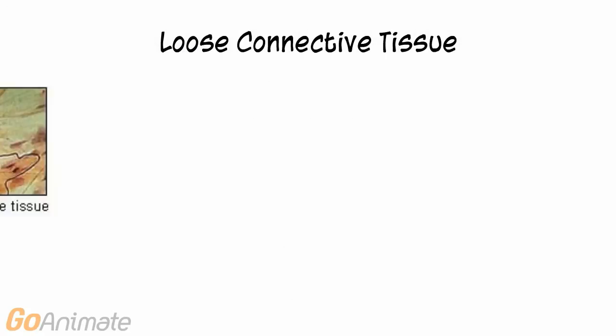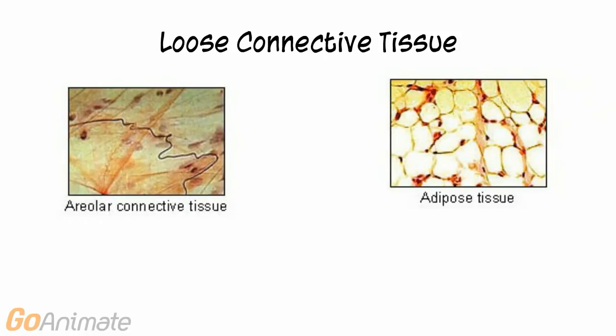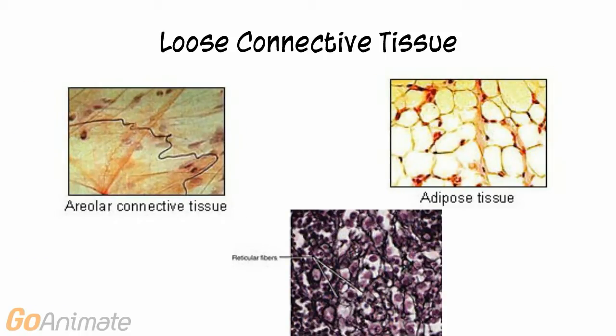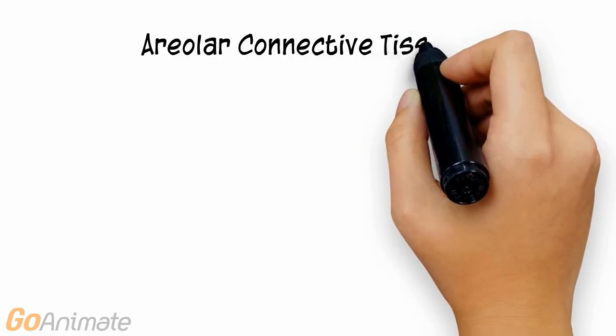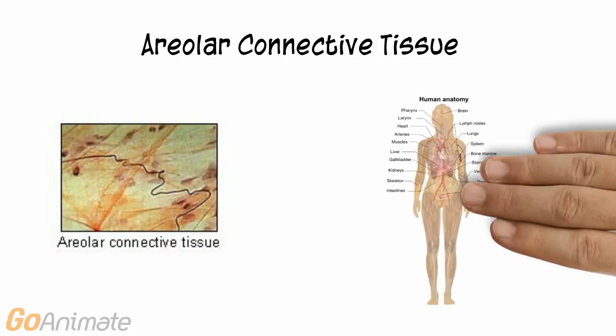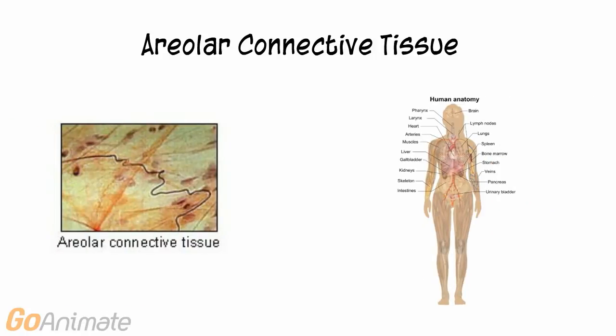Let's begin with loose connective tissue. Loose connective tissue is sometimes called areolar connective tissue. Adipose and reticular connective tissues can also be categorized as loose connective tissue. Areolar connective tissue is found throughout the body, in many of the membranes surrounding organs, as well as surrounding blood vessels and nerves.